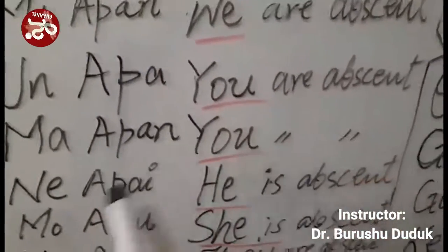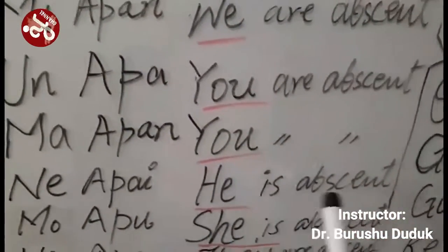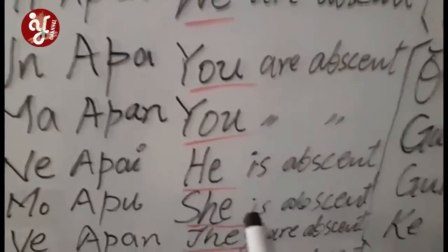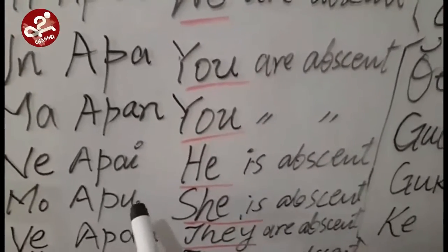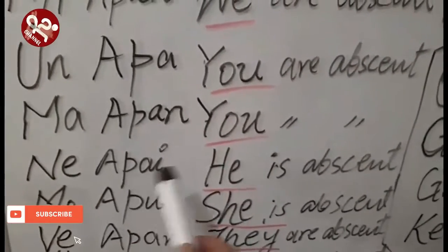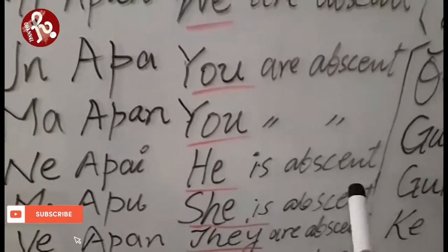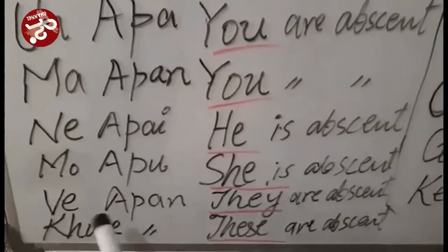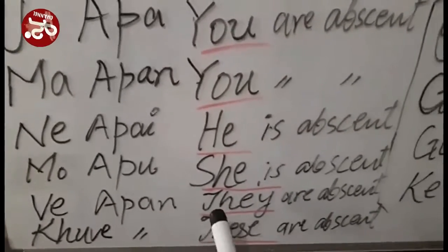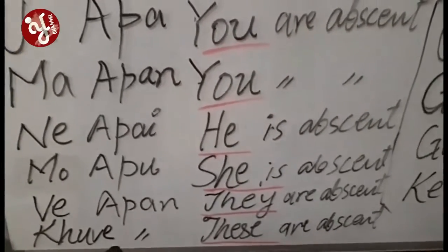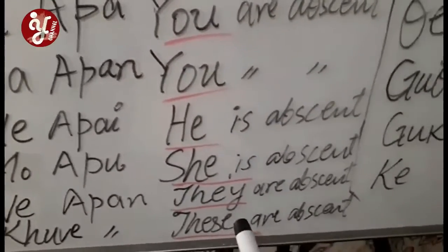Ne Appai means 'he is absent.' Ma Appu is for female, Ne Appai is for male — 'he is absent.' Mo Appa means 'she is absent.' We Appa means 'they are absent.' We Appa also means 'these are absent.'